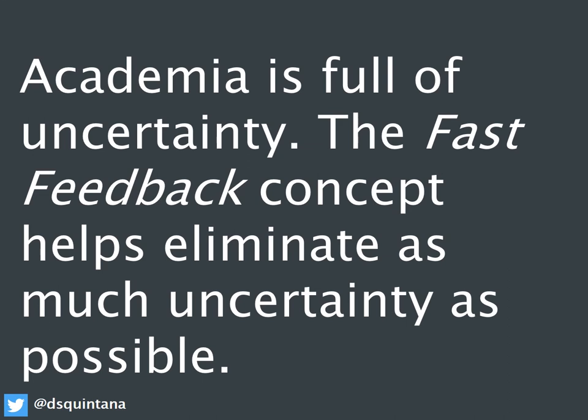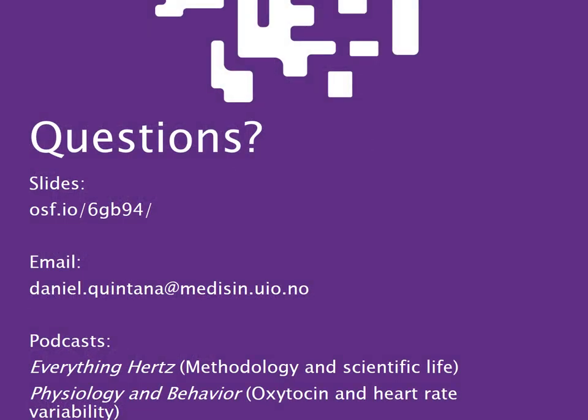To wrap up: we know academia is full of uncertainty. We don't know where we're going to be working in a few years, or how well our paper is going to be received. But by adopting the fast feedback principle, we can reduce this uncertainty — get feedback, understand what is the best use of our time, and adopt open science principles and transparency to get faster feedback on our work. Thank you very much.